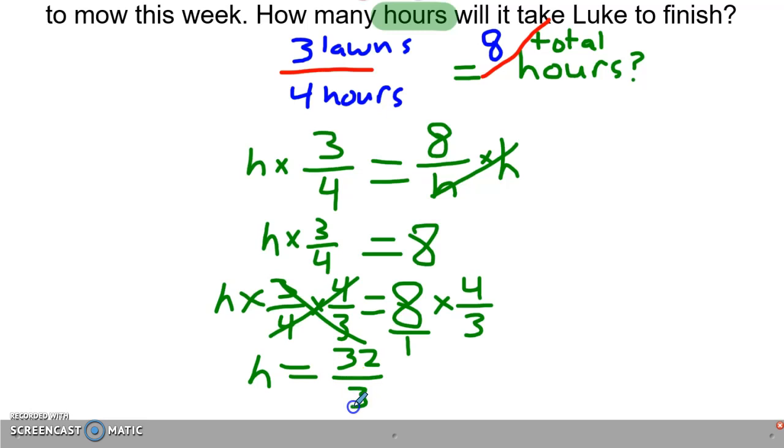32 over 3. I can look at that and it doesn't look like that will be able to be simplified because three is a prime number and it's not a factor of 32. So that is my answer.